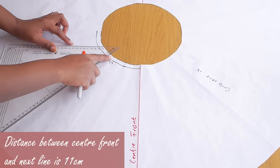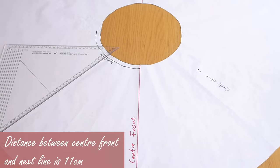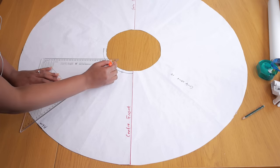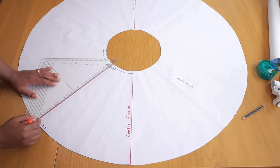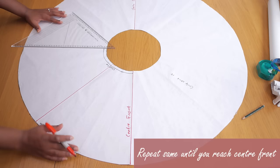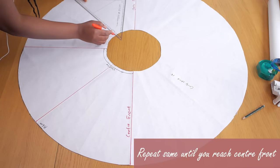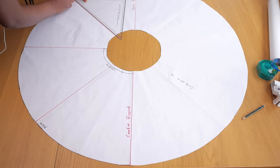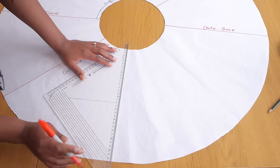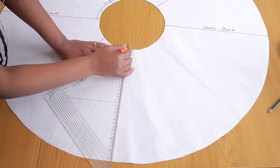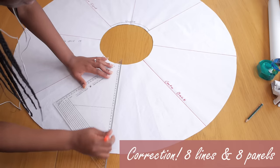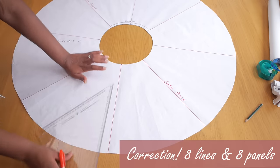This is something I made up and I stand corrected, but it worked for me. From the center front line to this line I'm about to mark is 11 centimeters, and I'm drawing a line that is straight from the waist all the way to the hem. I'm going to repeat that all the way around until I get back to my center front line. I ended up having a total of seven lines and eight panels.